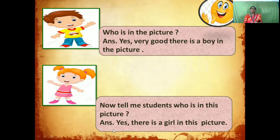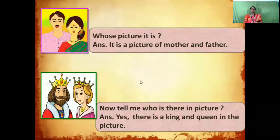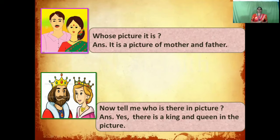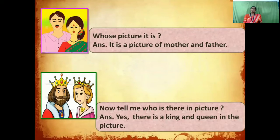Now let us see some more pictures. Who is there in the third picture? Yes, it is a picture of a mother and father. And now tell me about the last picture. Who is there in the last picture? Yes, there is a king and queen in the picture.